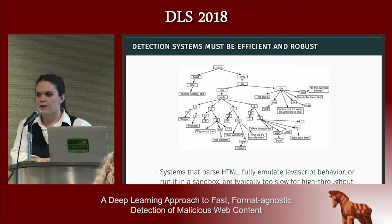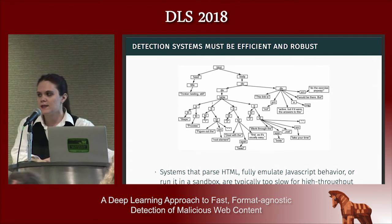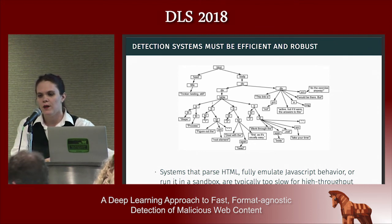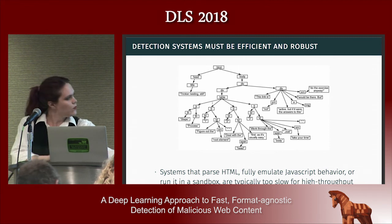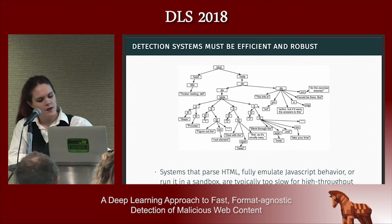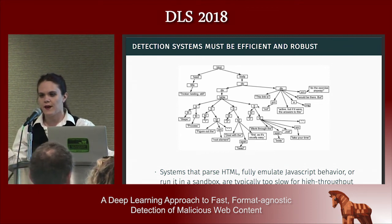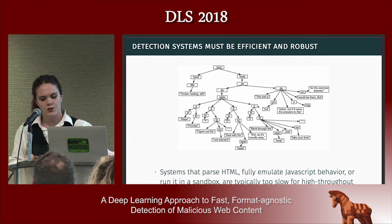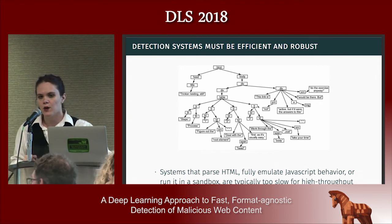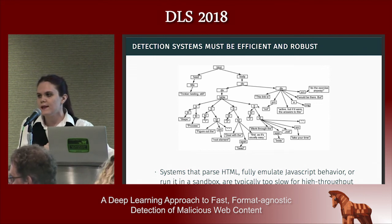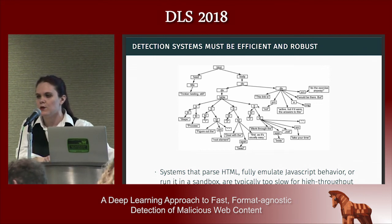The other main constraint we're operating under is that we're in industry. We're not just building this model as a theoretical tool — we want to deploy this at scale. We want a model that can score millions of web pages in an hour, so we need it to be fast and scalable. Systems that do explicit parsing of the HTML tree or that explicitly try to identify and emulate JavaScript behavior are often slow — running in tenths of seconds rather than milliseconds.